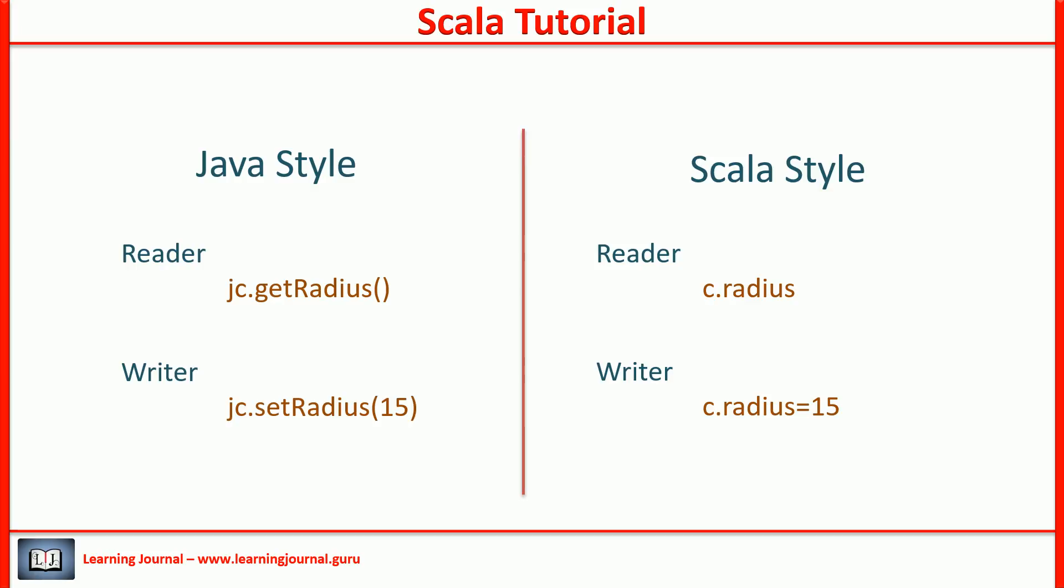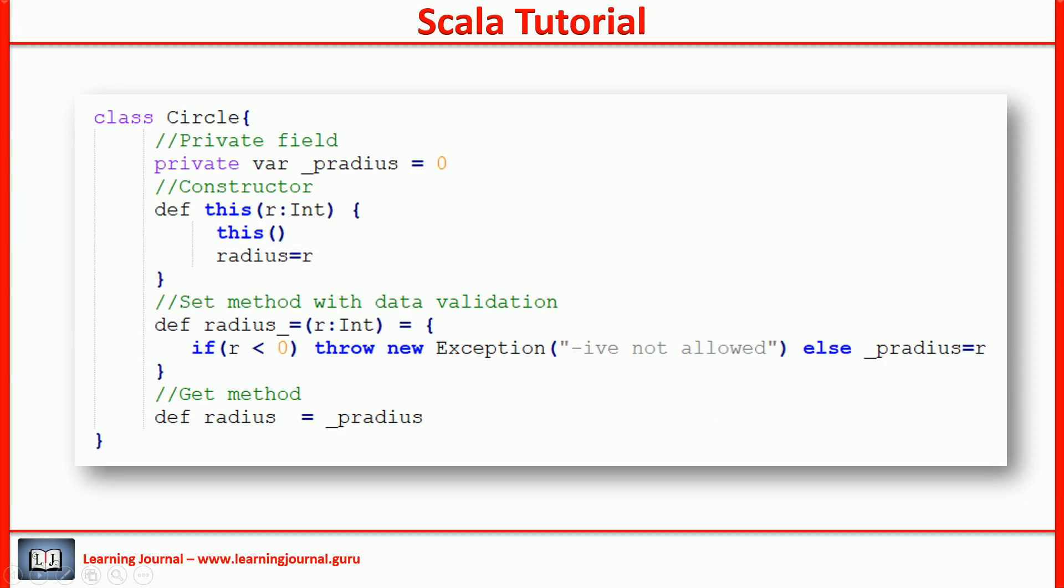I will explain that in a minute. But since the radius is internally a function, we are not losing the ability to add some logic. I can still add logic to validate the data. Here is the code for ScalaCircle. Don't worry if you don't understand the code. I'll explain everything.